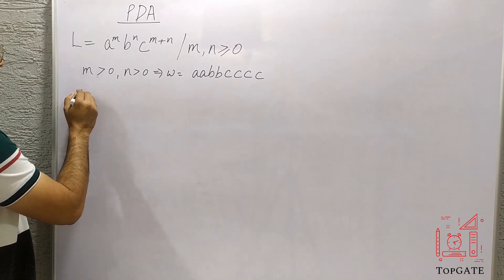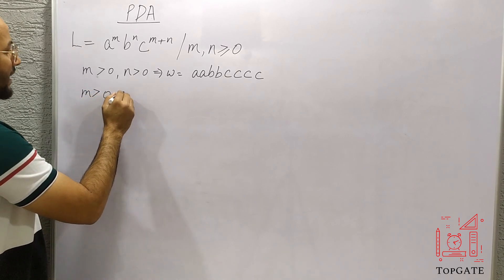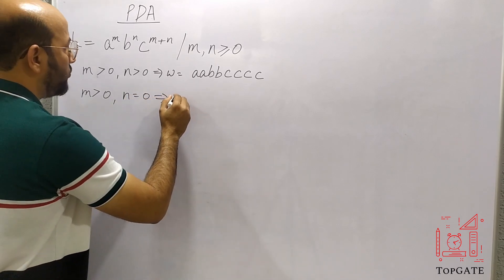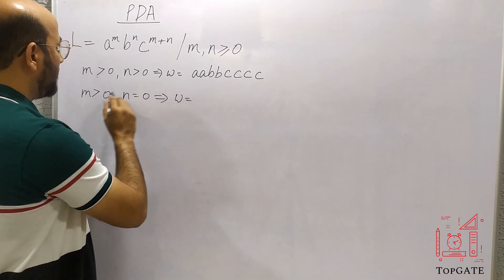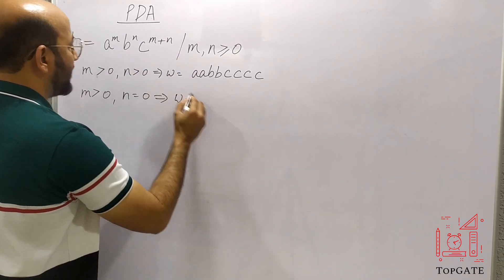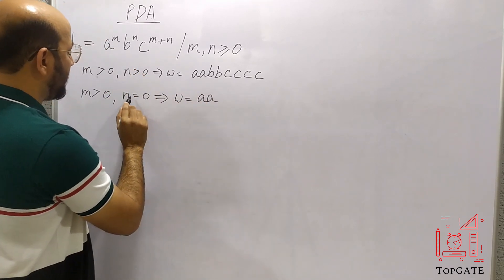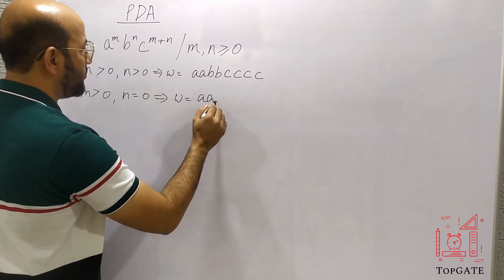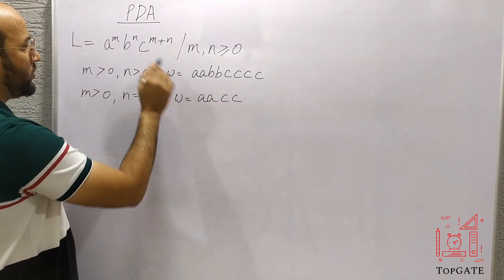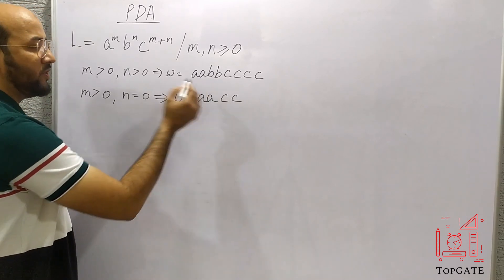If we take the value of m greater than zero and n equal to zero, the string we get — if m equals two — will be a, a (two a's), then no b's since n is zero, and then c will be m plus n, that is zero plus two equals two. So we will get two c's. We should design a PDA that accepts this string also.